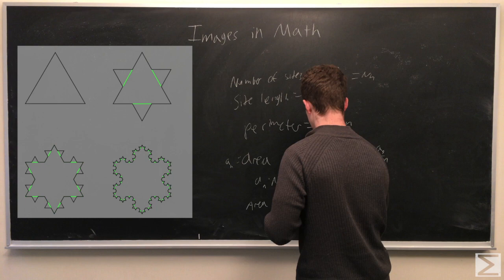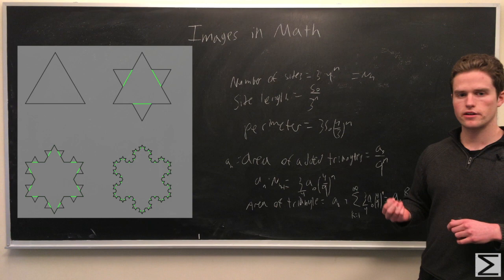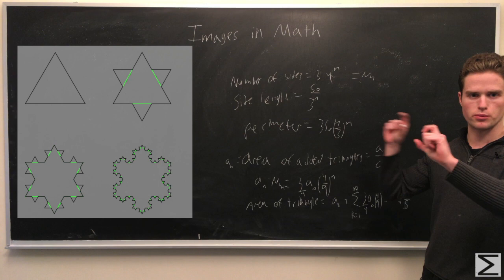So one way to calculate the area is to note, each time we move forward in our procedure, we add the area of so many new little triangles. And so the area of the added triangles,